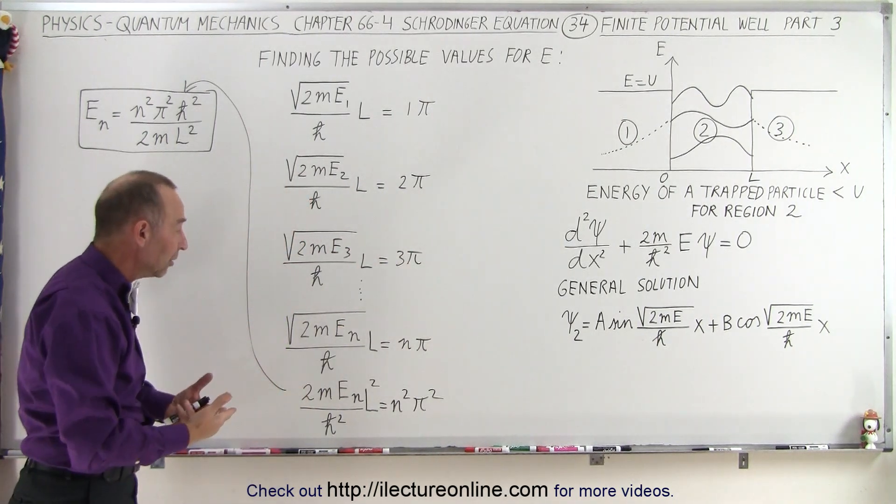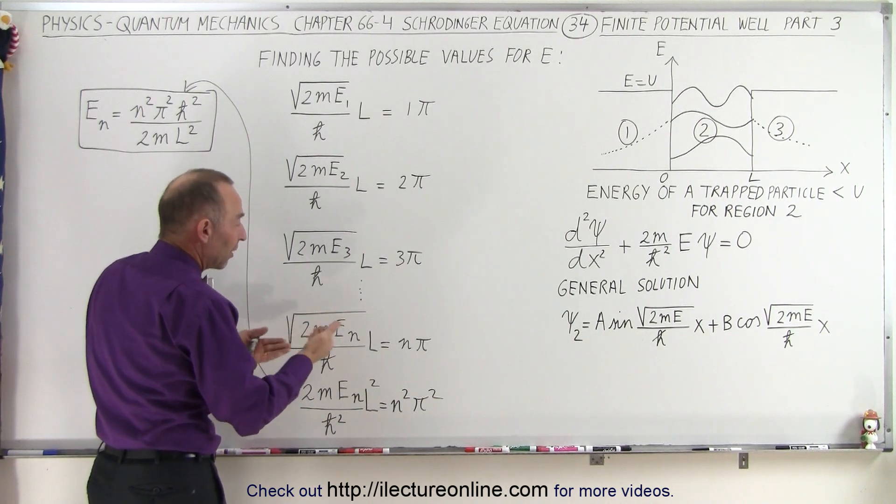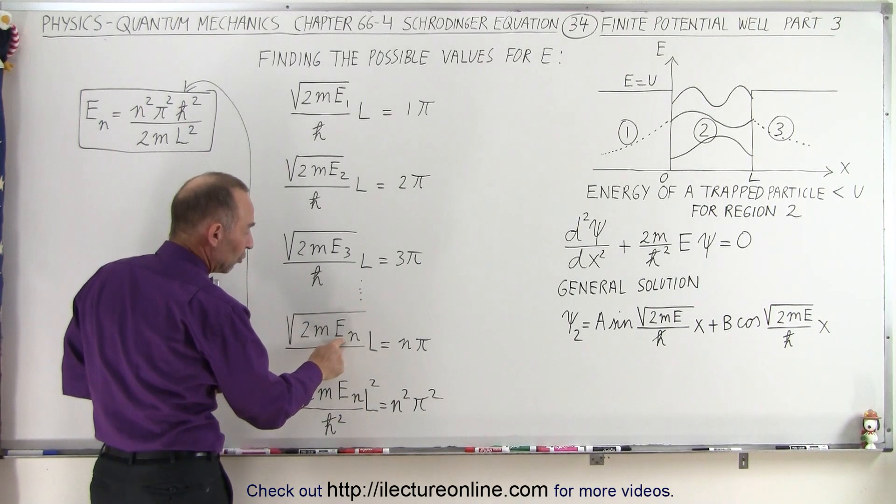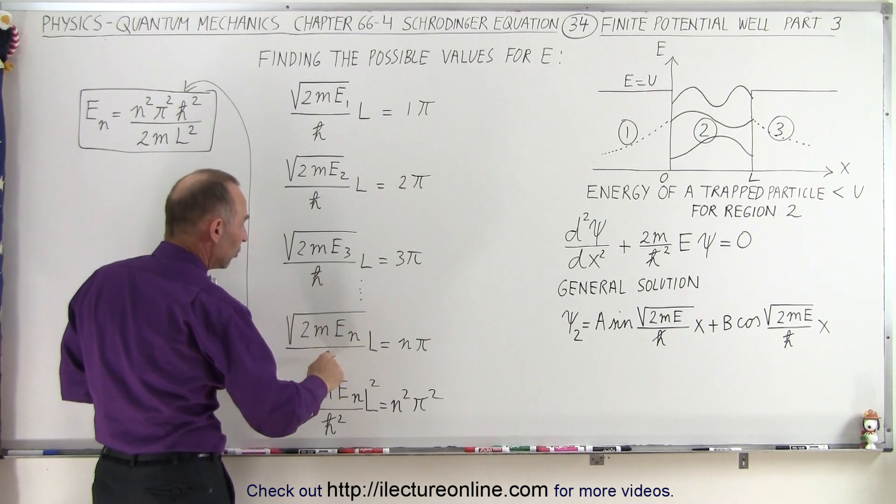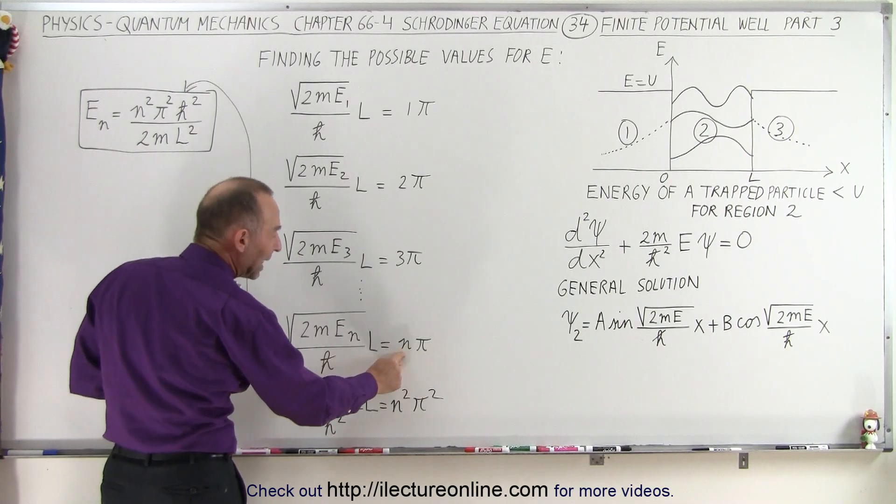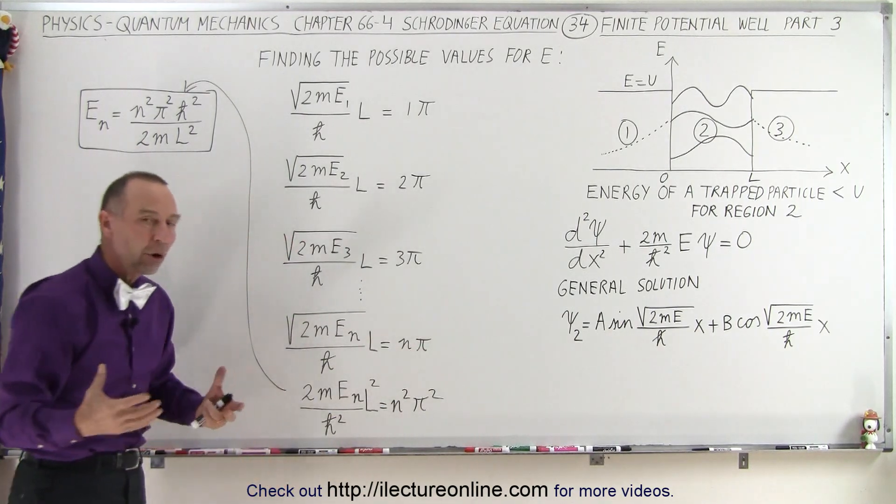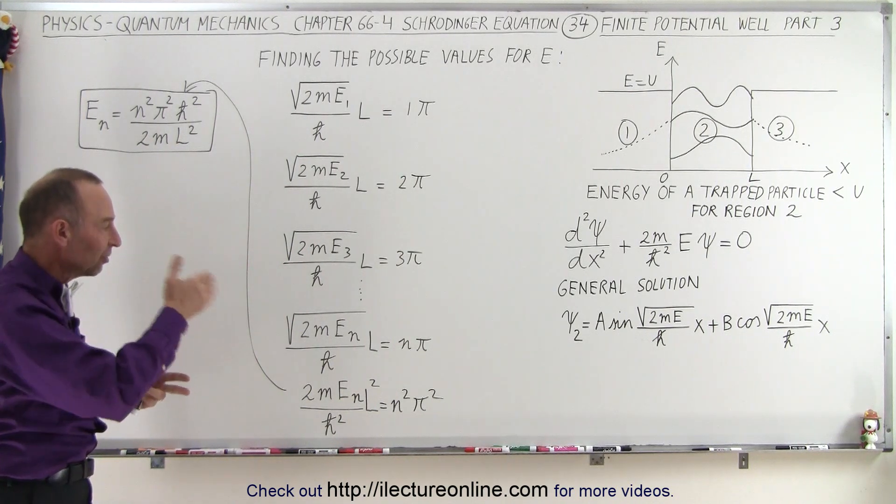In the end, the general equation looks like this: if we have a number of energy possibilities for the particle inside region 2, let's call them E_n. We can set this argument, when we multiply by L for x equals L, equal to nπ. Those are all the possible values the energy of the particle can have inside region 2.